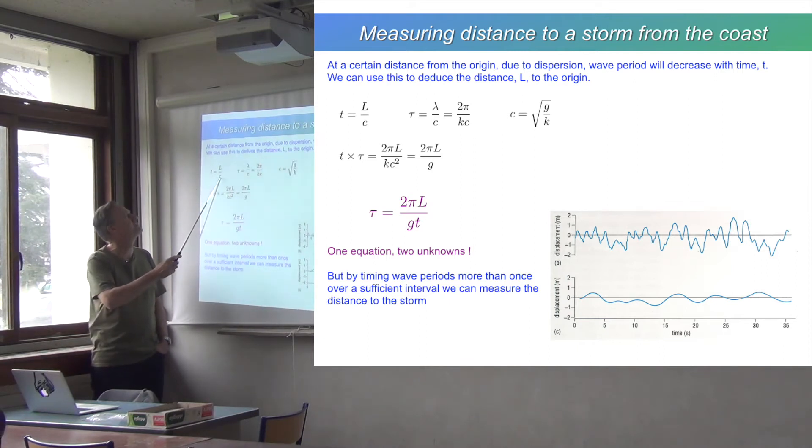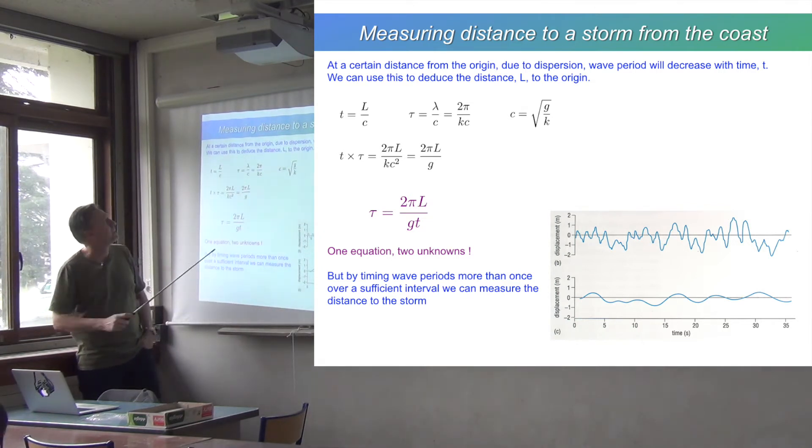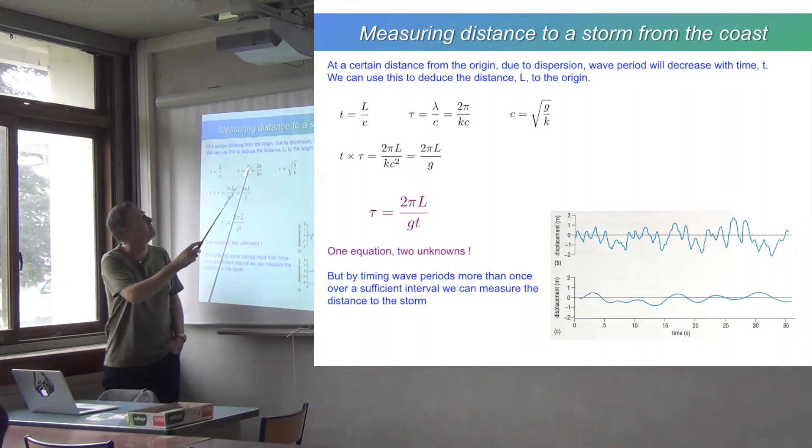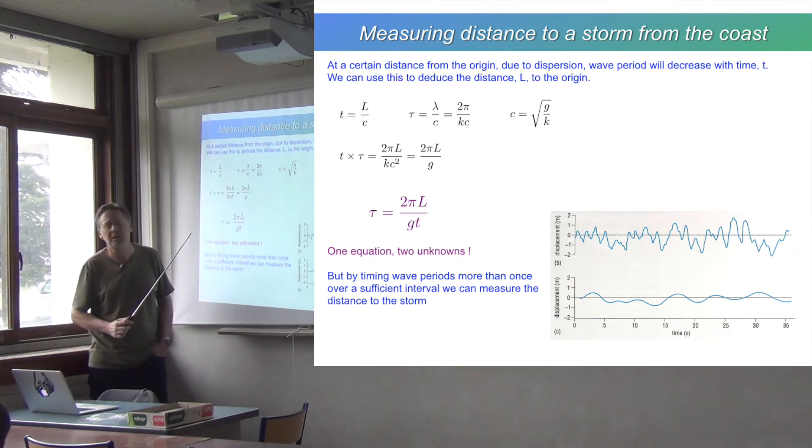And the speed, the phase speed, is C. So obviously, T is big L over C. We also know that the wave period is lambda over C, where lambda is the wavelength.